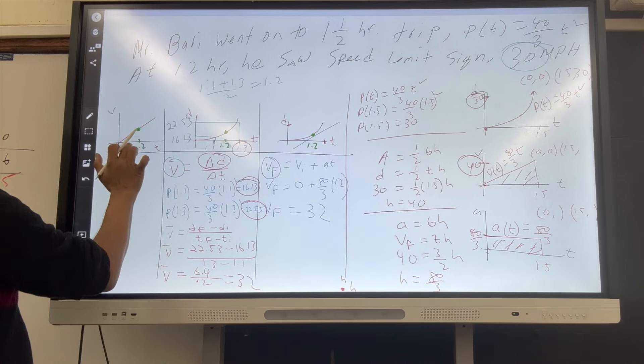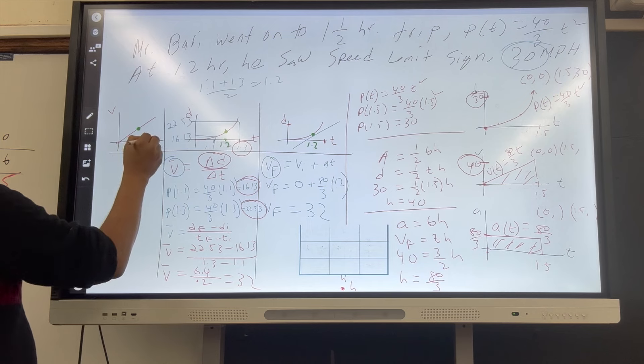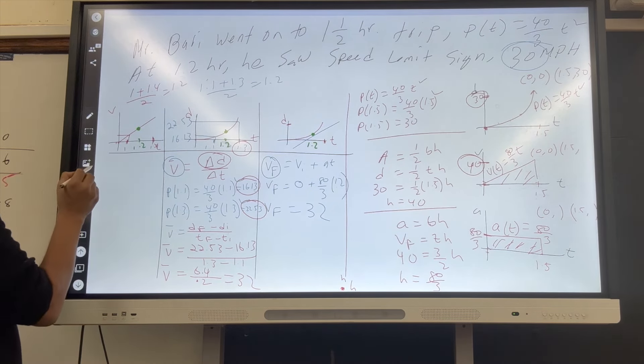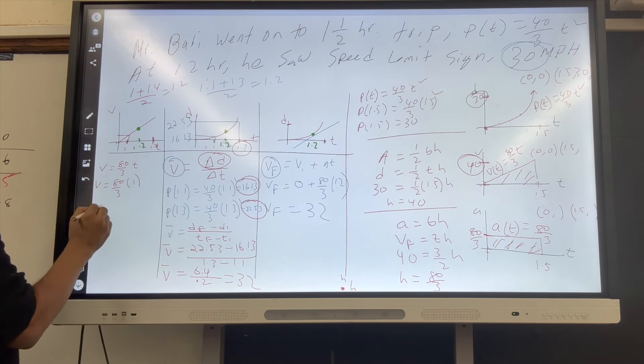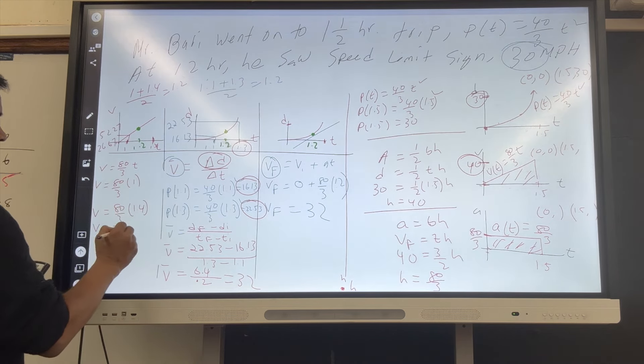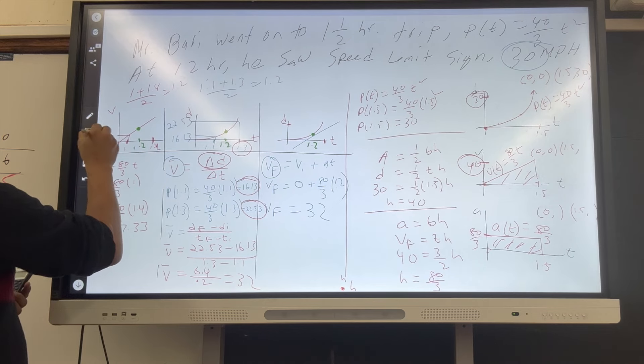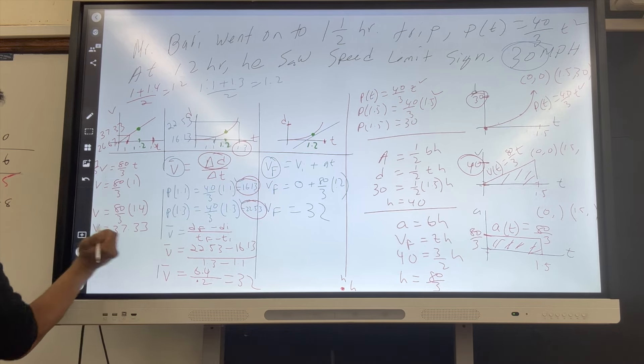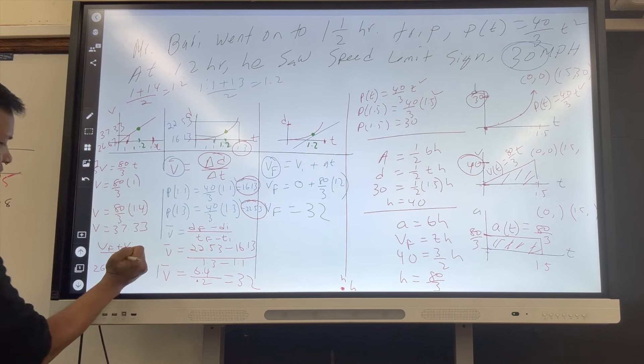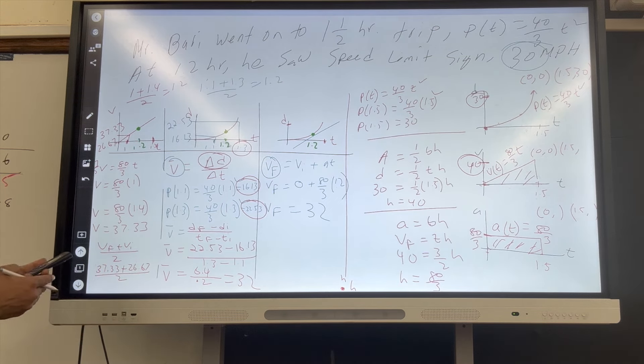Again, what is the midpoint of 1.2? You can use 1 and you can use 1.4. 1 plus 1.4 divided by 2 is 1.2. You have to use V equals 80 over 3T. So 80 over 3 times 1 and 80 over 3 times 1.4, that is 26.67 and 37.33. Vf plus Vi over 2. So 37.33 plus 26.67 divided by 2 and that is 32.